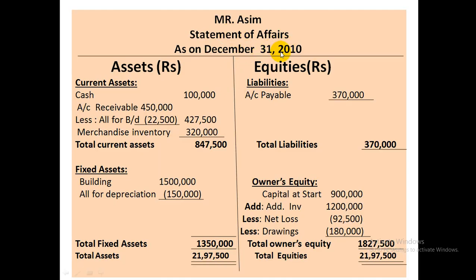Mr. Aasim ki statement of affairs hamein banani hai. Jo year-end ki assets hain, unko hum ne post kiya — current assets — unka total kiya. Allowance for doubtful accounts receivable mein se minus hoga, building mein se depreciation minus hoga. Total current assets aur total fixed assets donon add ho gaye, toh humaare paas aayenge total assets. Equities ko dhekhe: liabilities hain 3 lakh 70, kyunki aik hi liability hai humaare paas.